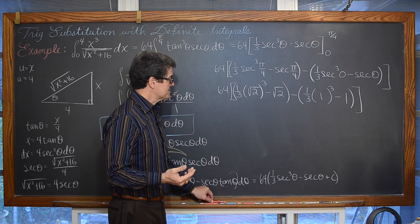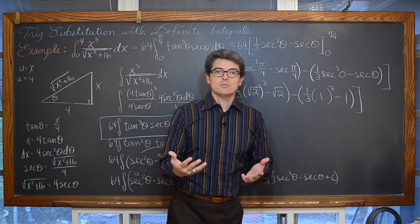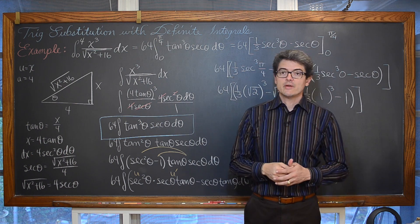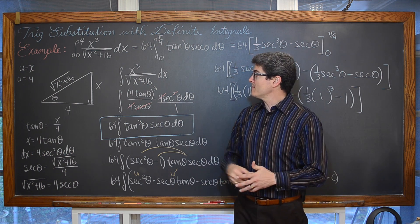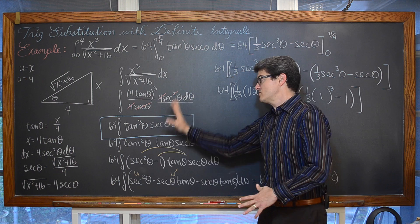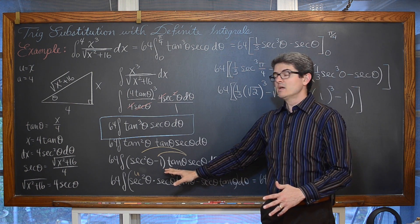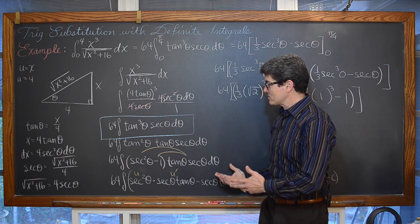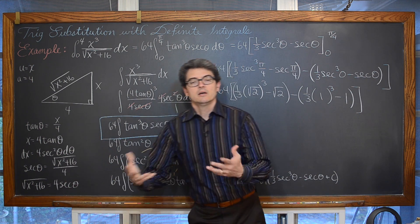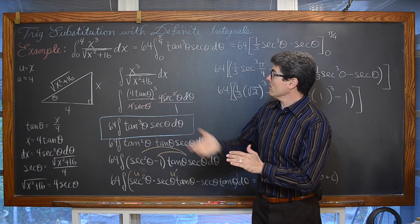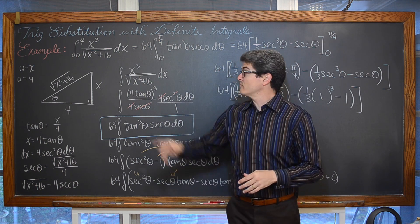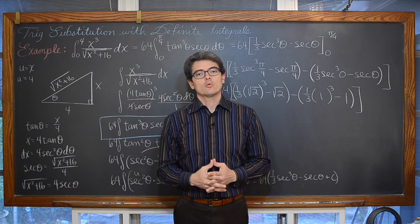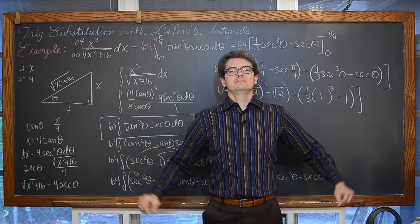That is the end of the example. If you are working with definite integrals and you realize you need trigonometric substitution, you have the option of going off to the side, doing the indefinite integration, converting theta expressions back to x, and then applying limits — or simply changing your lower and upper limits into terms of theta. The end of the problem will go a little bit quicker that way. I'm Mr. Tarrou. BAM! Go do your homework!